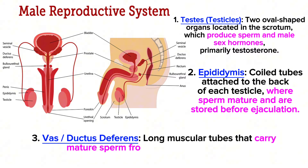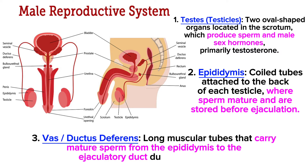Next is the vas deferens, or ductus deferens — long muscular tubes that carry mature sperm from the epididymis to the ejaculatory duct during ejaculation.